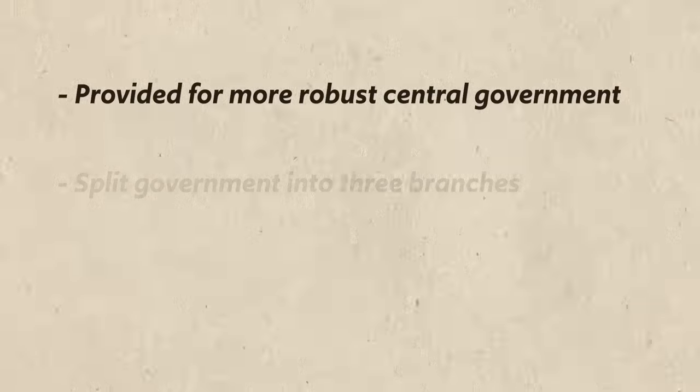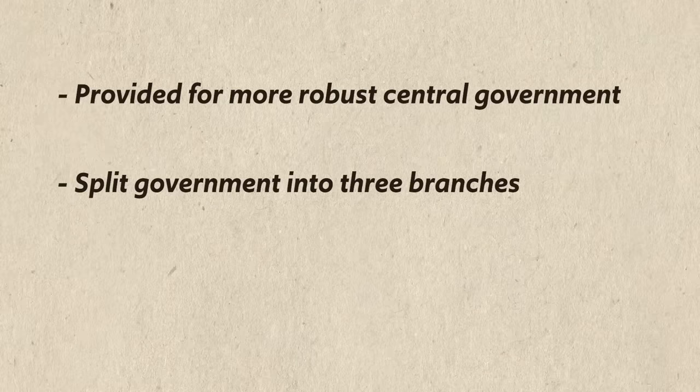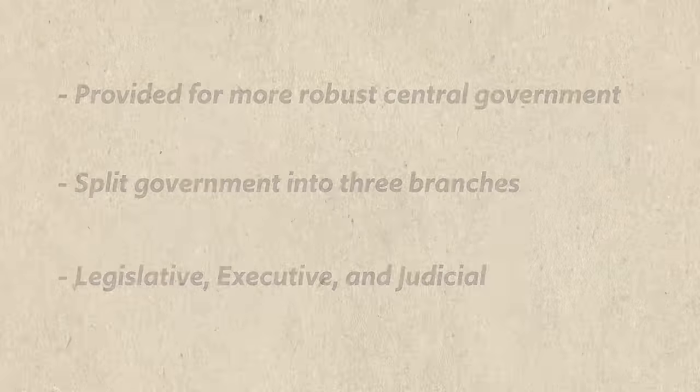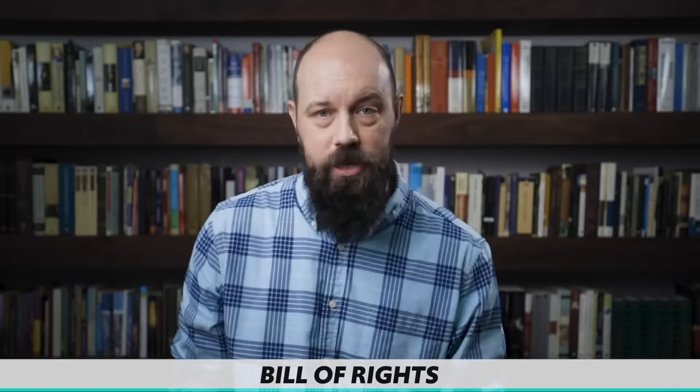A new constitution was drawn up providing for a more robust central government, while checking and balancing the power of that government by splitting it into three branches: the legislative, the executive, and the judicial. Once done, the new constitution went to the states for ratification. Federalists like Alexander Hamilton, John Jay, and James Madison wrote persuasive essays at a dizzying pace — together these became known as the Federalist Papers. The Anti-Federalists argued against ratification because the Constitution lacked a Bill of Rights enumerating individual liberties. In the end, the Federalists prevailed partly because they agreed to add a Bill of Rights as soon as it was ratified. In March of 1789, the Constitution of the United States went into effect.